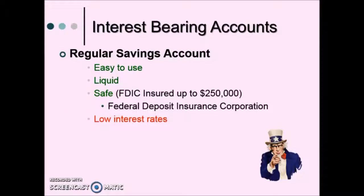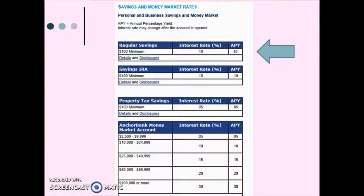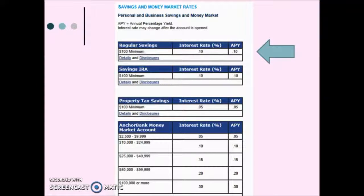The FDIC will give you your money up to $250,000. The downside is they have very low interest rates. Here's a table from a bank showing what a regular savings account requires — a minimum of $100 in the savings account — and they're earning a one-tenth of one percent interest rate. So not very high at all, but some of those other pluses outweigh the low interest being paid.